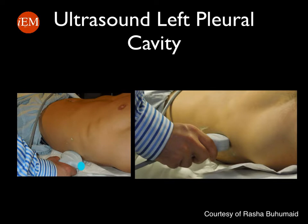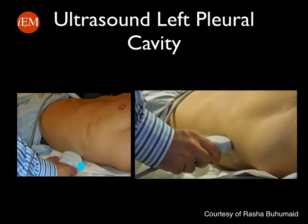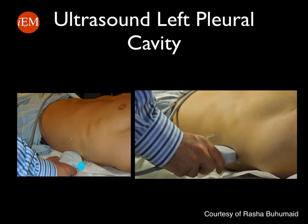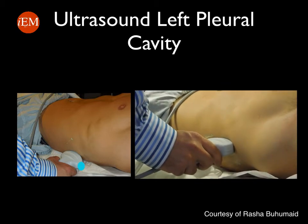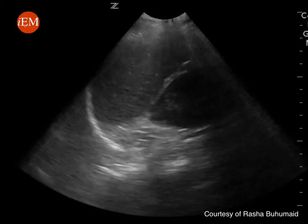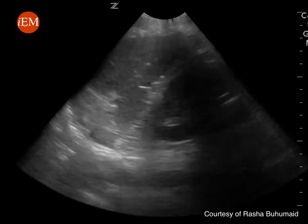You will perform the same imaging technique to evaluate the left pleural cavity. The only difference is that you will place the probe coronally and more posteriorly, so that your knuckles are touching the bed. Then move the probe more cephalad with the probe marker towards the patient's head, and interrogate the area just above the diaphragm looking for any signs of pleural effusion. This is the ultrasound image you will try to obtain.